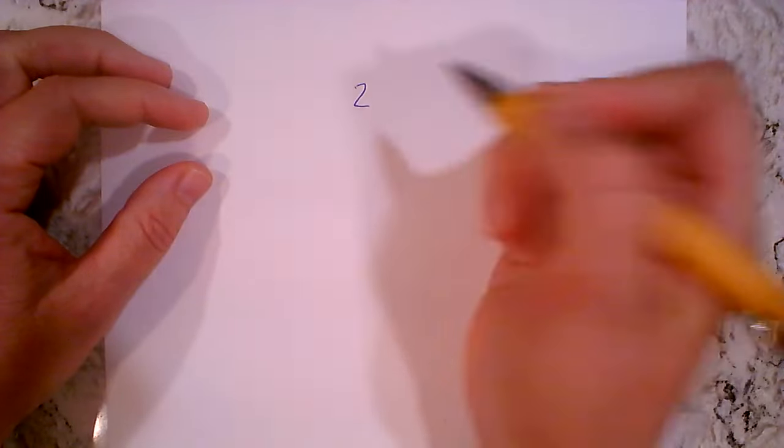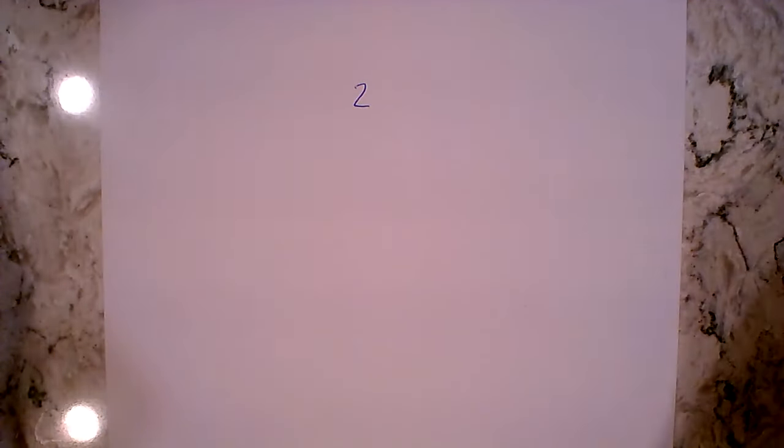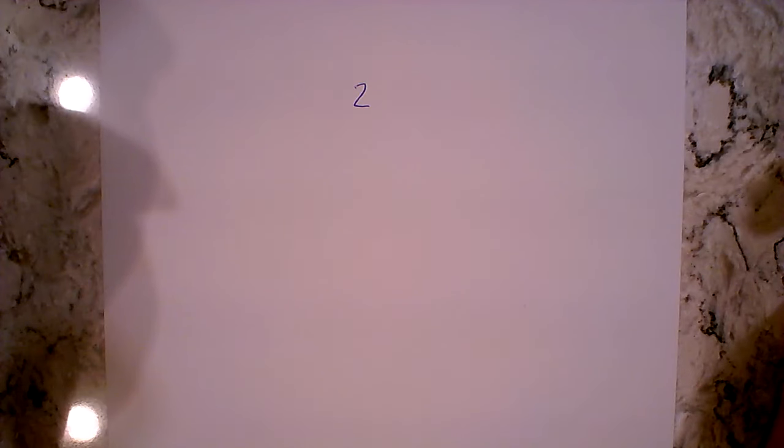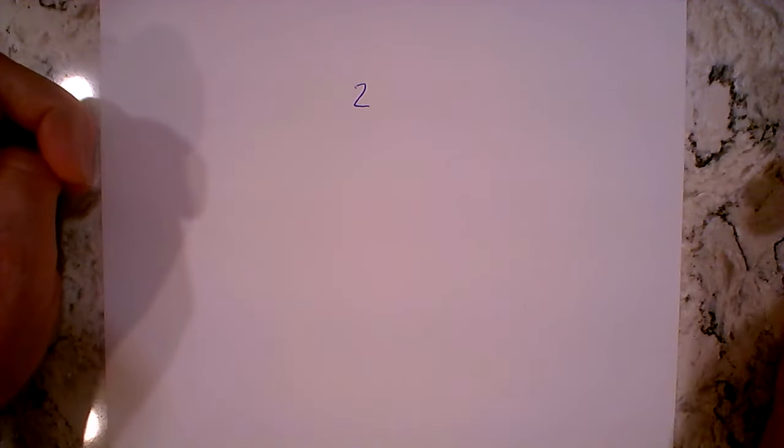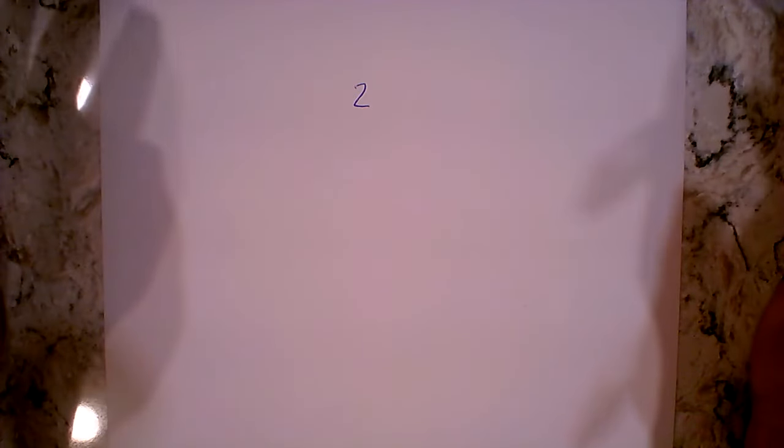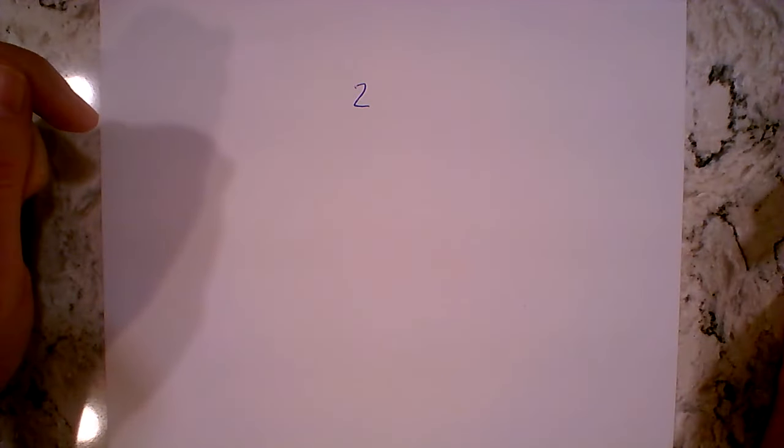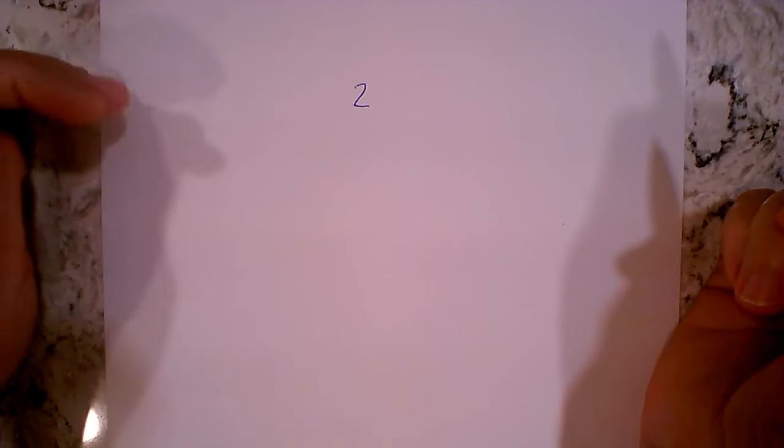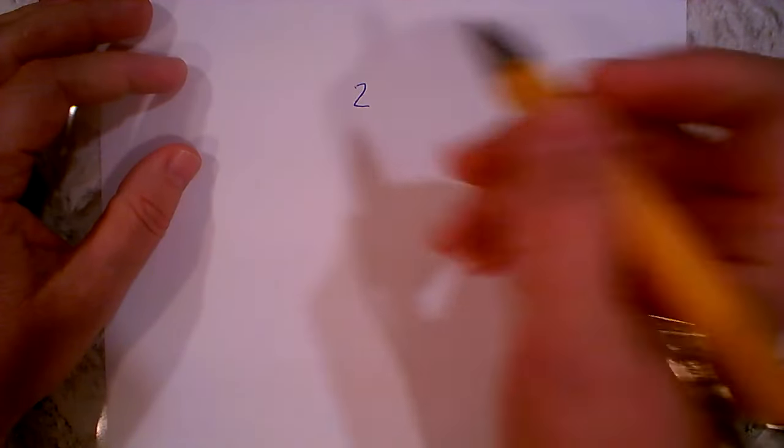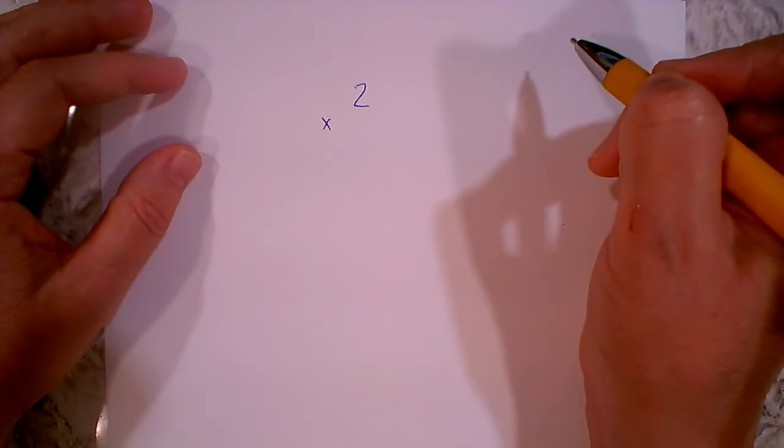We start with any number and you can do any version of this. There's all kinds of versions in the curriculum itself. I'm going to talk to you about modifying that at the end of this. But let's say our first starting number is two. Then we need to define the parameters.